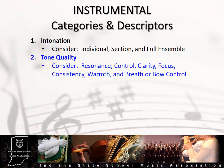Category 2 refers to tone quality — the timbre or color of sound produced by the ensemble. The assessment of tone quality can be approached in much the same way as intonation, on the individual, section, and ensemble level. Descriptors to consider in reference to tone quality are resonance, control, clarity, focus, consistency, warmth, and also how all of those can be affected by breath or bow control. Be visually observant as well as orally observant, since such things as posture and ensemble setup can have an impact on the quality of the sound you are hearing.